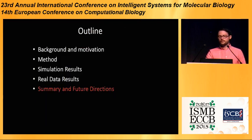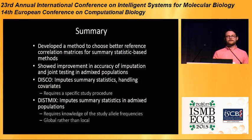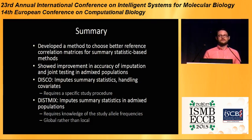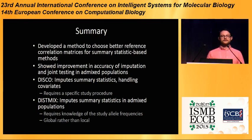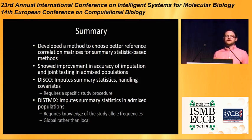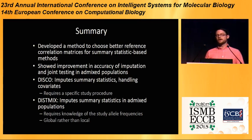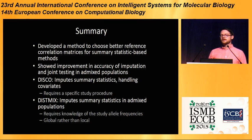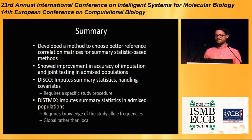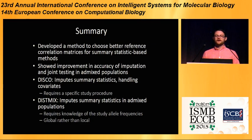To summarize: we've developed a method to choose better reference correlation matrices for summary statistic-based methods. This allows us to apply it to any method that uses summary statistics but needs LD estimates. We've showed improvement in accuracy for joint testing and imputation in admixed populations, and this can be used in any type of summary statistic-based method. I wanted to mention two related recent papers in bioinformatics: DISCO and DISC-MIX. DISCO imputes summary statistics handling covariates, which we don't do, but it requires a specific study procedure whereby the PCs are computed in the study and reference populations at the same time, which is somewhat difficult to organize and loses some of the advantage of summary statistics.